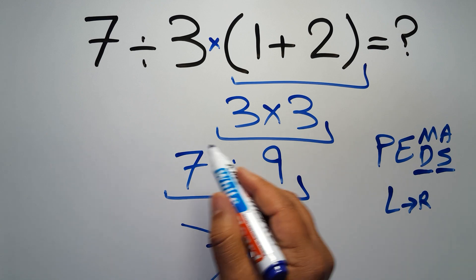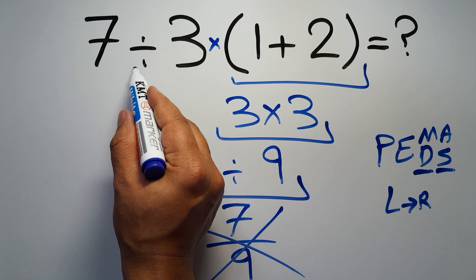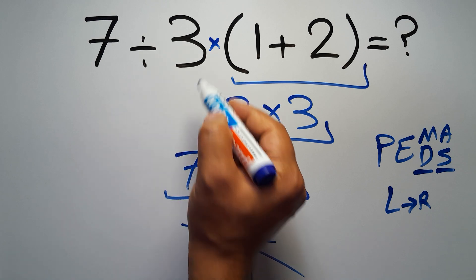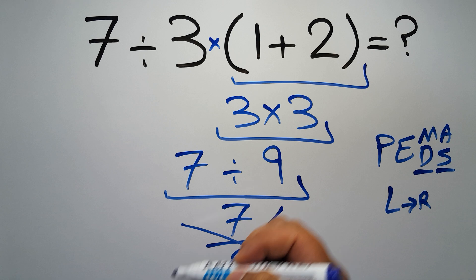So according to PEMDAS, first we have to do this parentheses, then this division, and finally this multiplication. If we do this multiplication before this division, it is wrong.